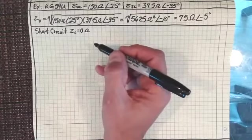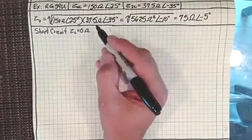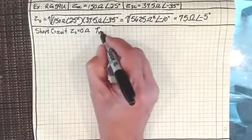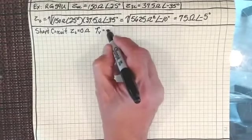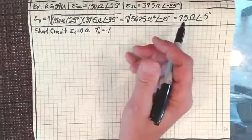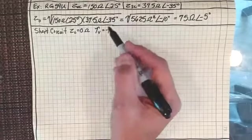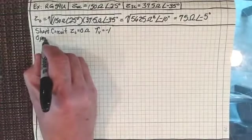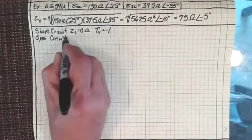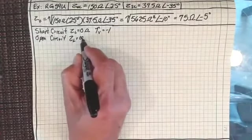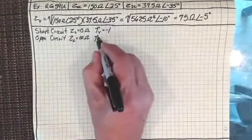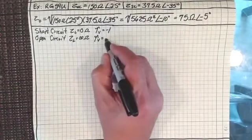When we throw that into the equation for the voltage reflection coefficient, that's going to give us minus 1, basically telling us that the reflection is going to be out of phase by 180 degrees — that's what the minus 1 signifies. And if we were looking at an open circuit load, we can see that that would be infinity ohms, and my reflection coefficient for the voltage would be positive 1.